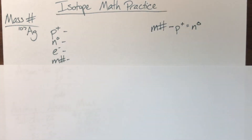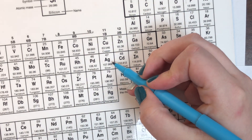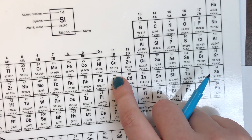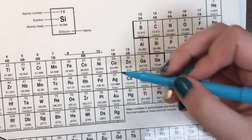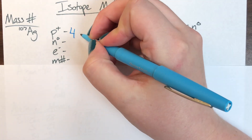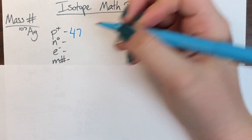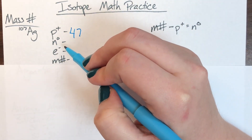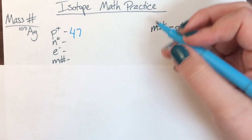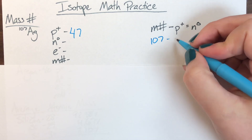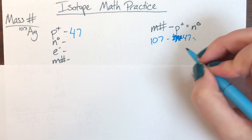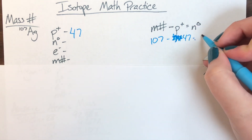From the symbol, I can go to the periodic table and find Ag (silver). The first thing I want to notice is the atomic number, which is the same as the number of protons. From my key, the atomic number is the top number, so the number of protons for silver-107 is 47. Now I'll figure out the number of neutrons: mass number minus protons, so 107 minus 47, which gives me 60 neutrons.